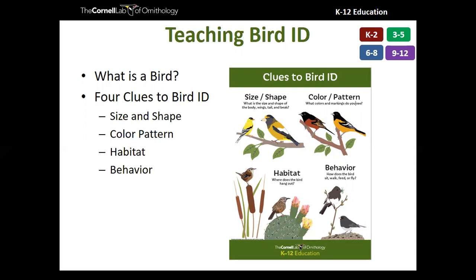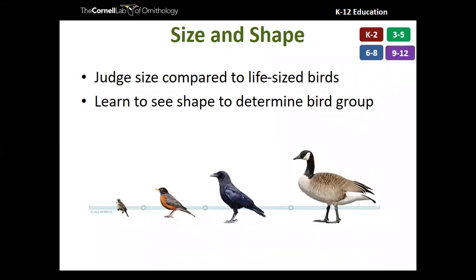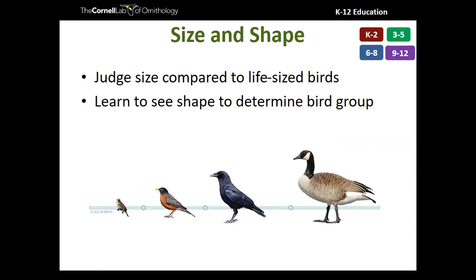One initial tool we use is clues to bird ID — we've developed a poster covering four clues that match up with Inside Birding videos. The first clue is size and shape. This is important because when you use the Merlin Bird ID app, one of the first questions it asks is how big is the bird: tiny like a sparrow, medium-small like a robin, medium-large like a crow, or pretty large like a goose. Size and shape is important for students and adults when judging and identifying a bird.